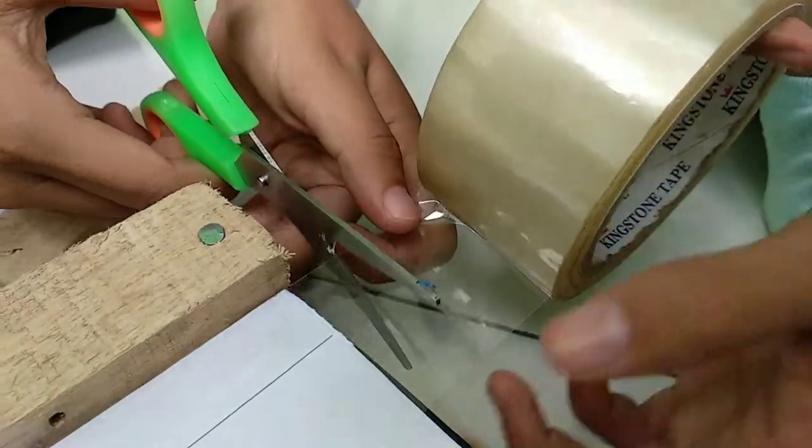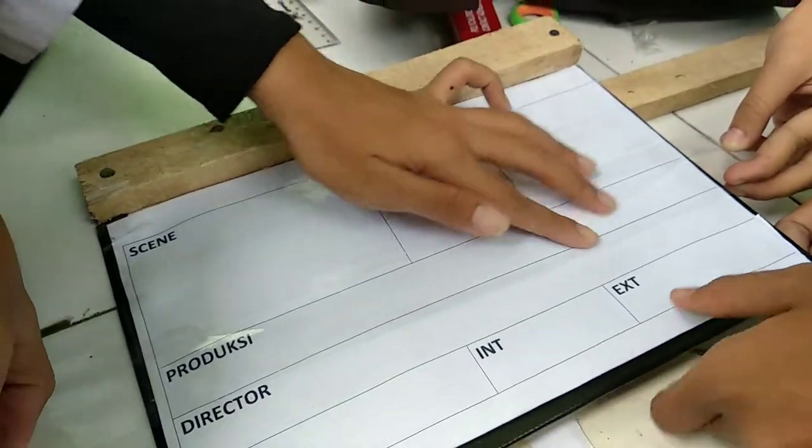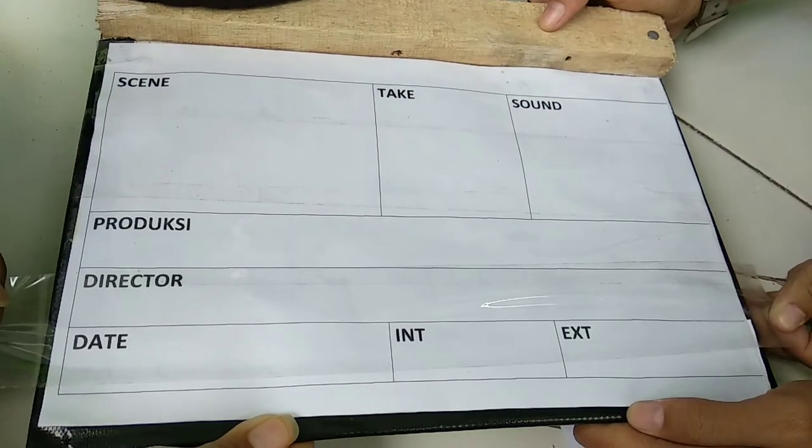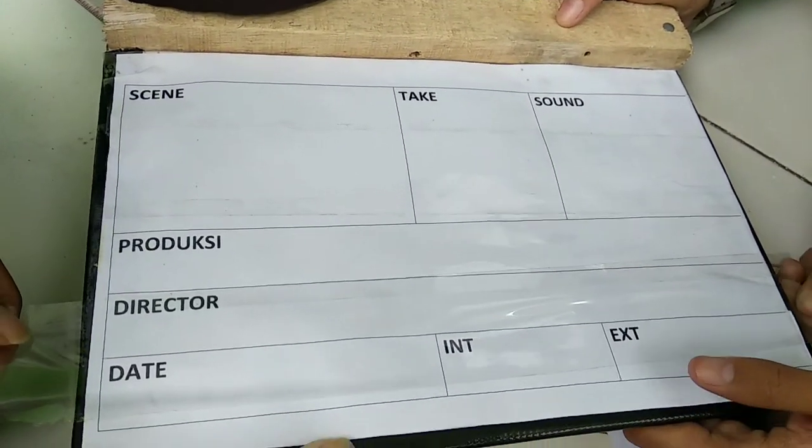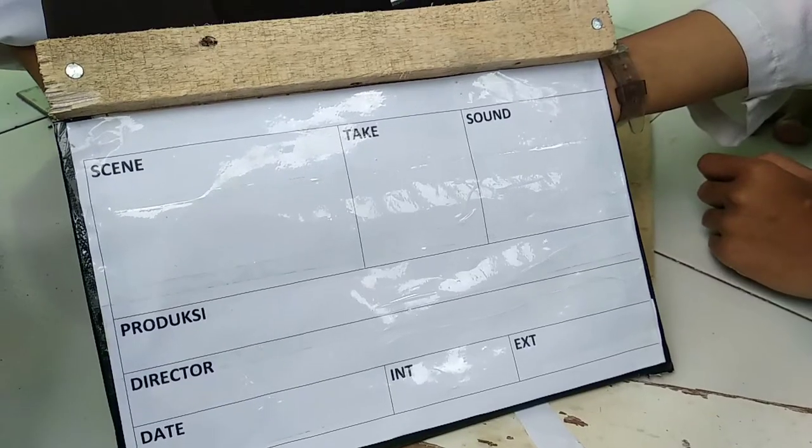Create the sections of the clapperboard using white acrylic paint. Use the image in this guide for an idea on how to create the sections of the board. You can also use the paint to decorate the clapperboard frame.